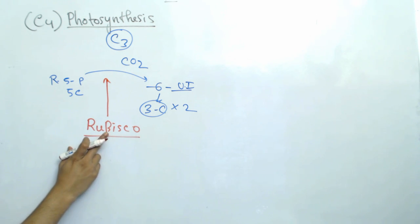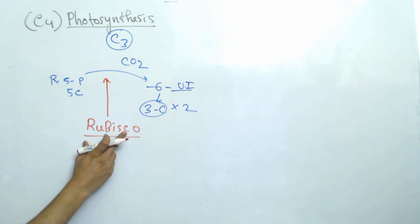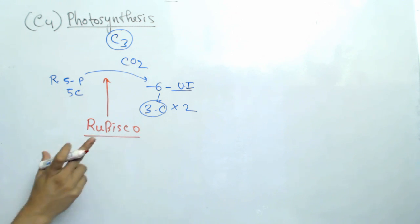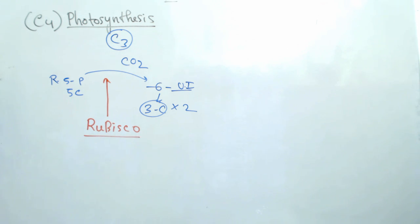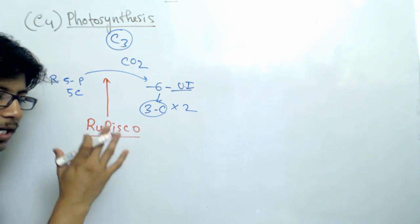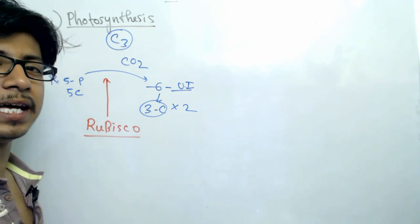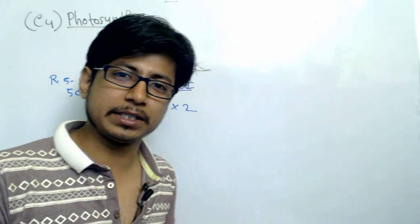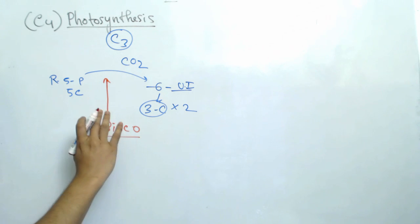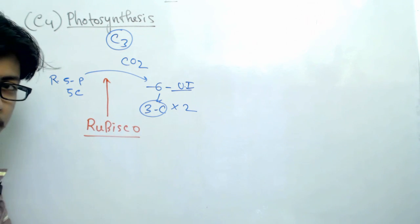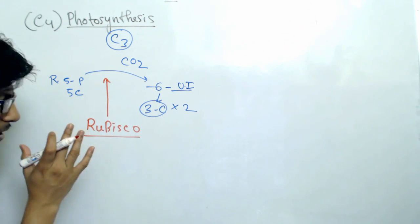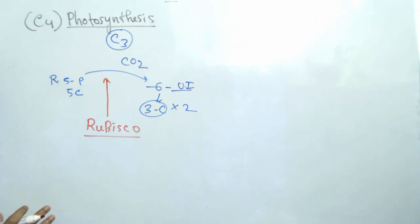That enzyme is known as RuBisCO — ribulose bisphosphate carboxylase oxygenase. RuBisCO is the most abundant enzyme in the whole world because it is present in every single aspect of the photosynthetic organism's body. Now, what is the problem with this pathway?